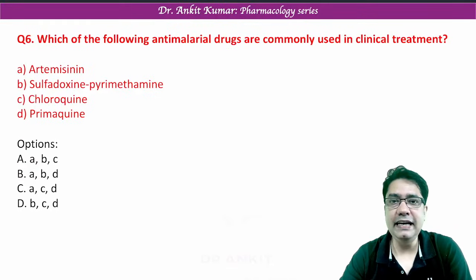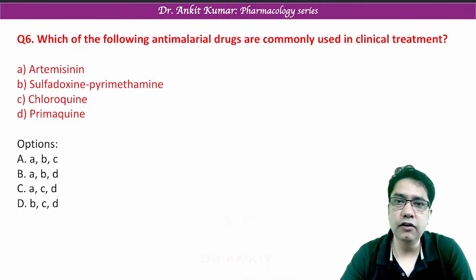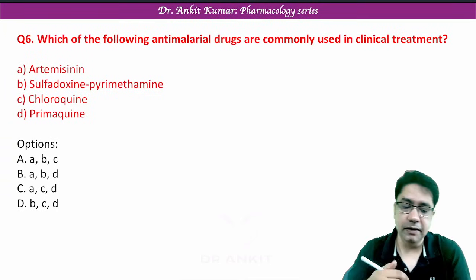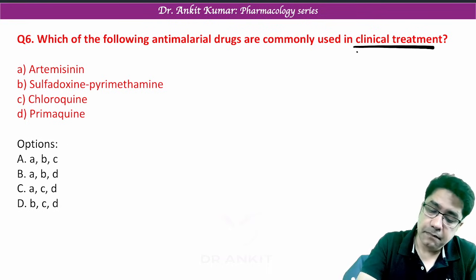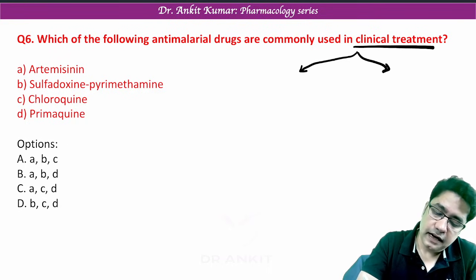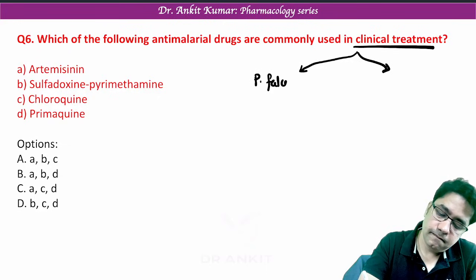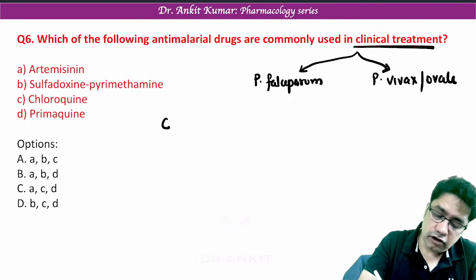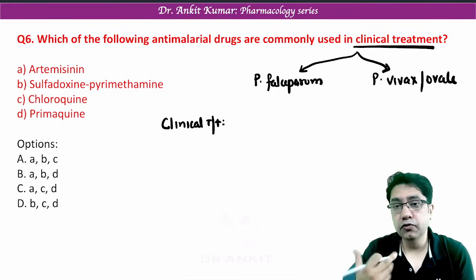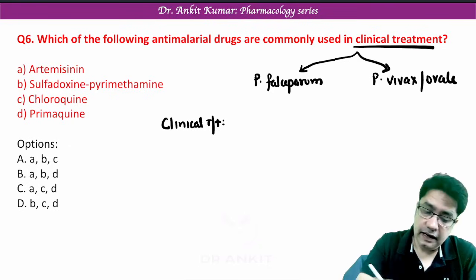Next question: which of the following anti-malarial drugs are commonly used in clinical treatment of malaria? In clinical treatment of malaria, we have discussed that malaria in our countries is mainly caused by either P. falciparum or P. vivax and ovale. Clinical cure or clinical treatment means you have to produce symptomatic improvement in cases.